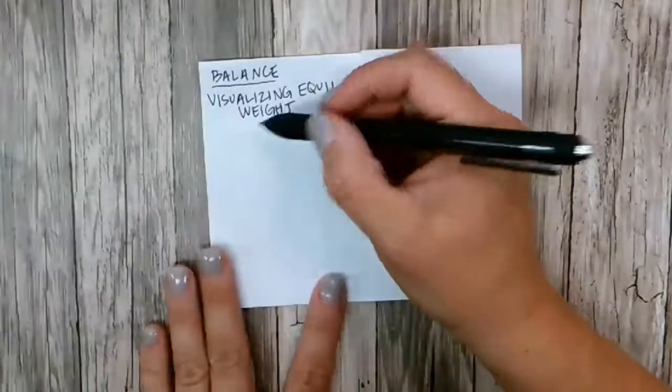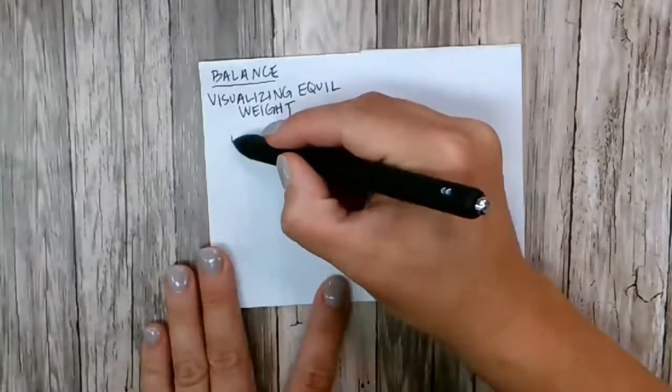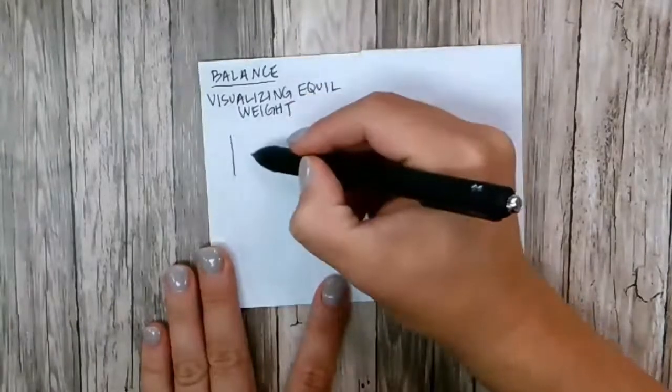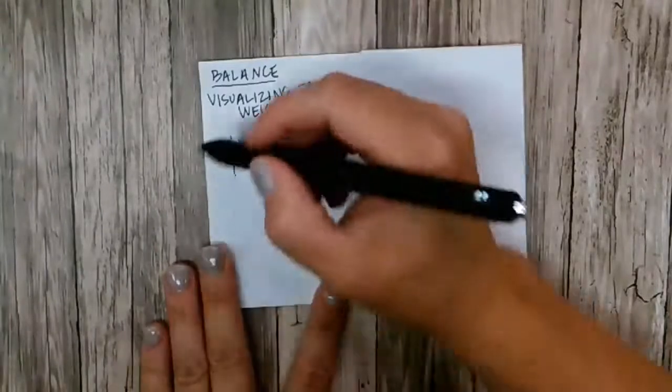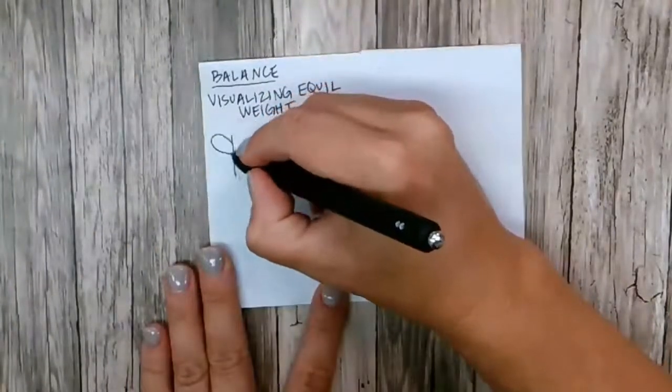And there's three types of balance that we are going to work on or talk about. The first one is symmetrical balance, where everything on the left and on the right is the same. So a lot of times, I like to make a butterfly.